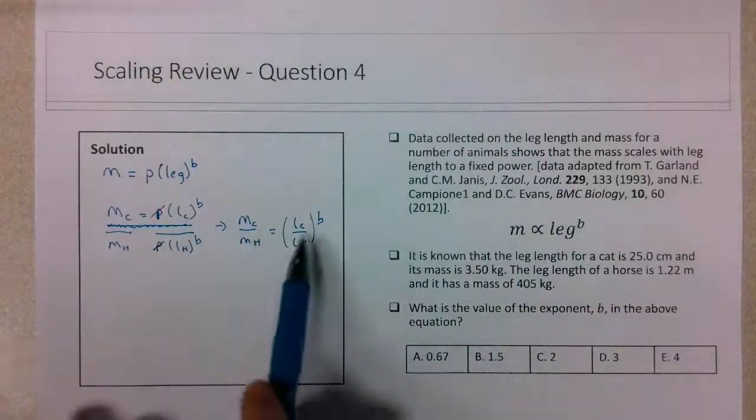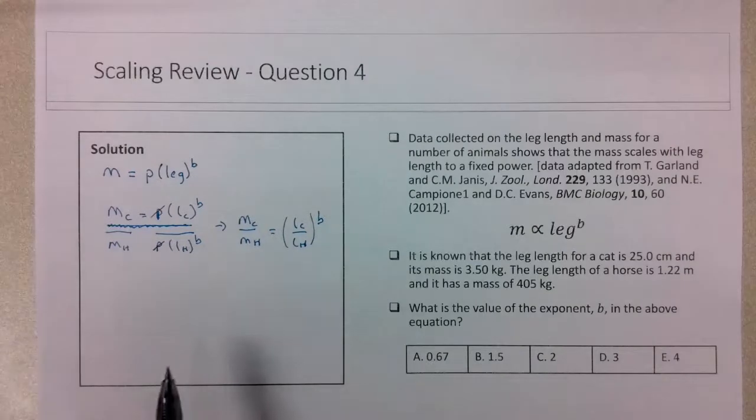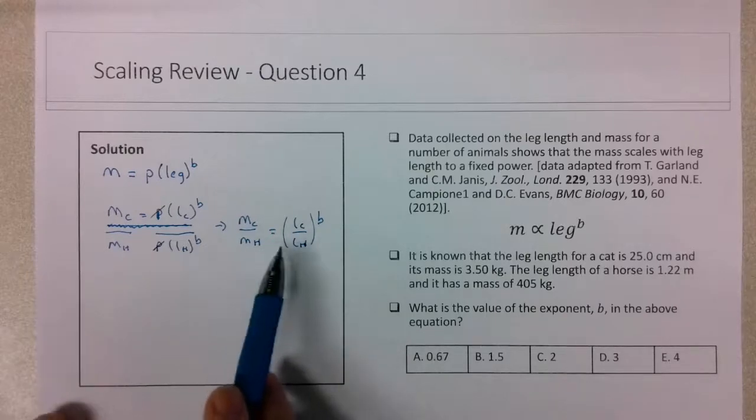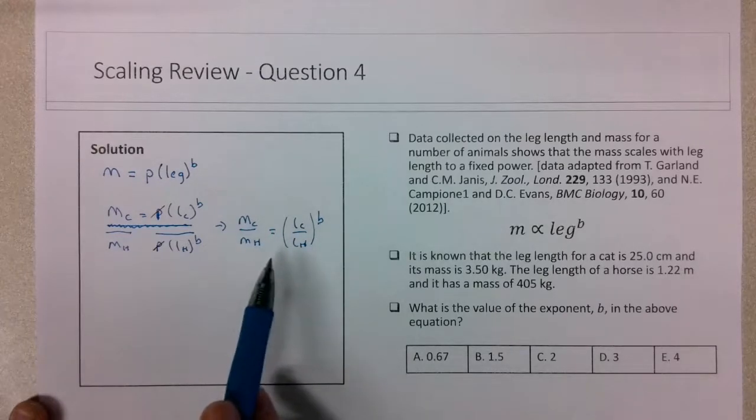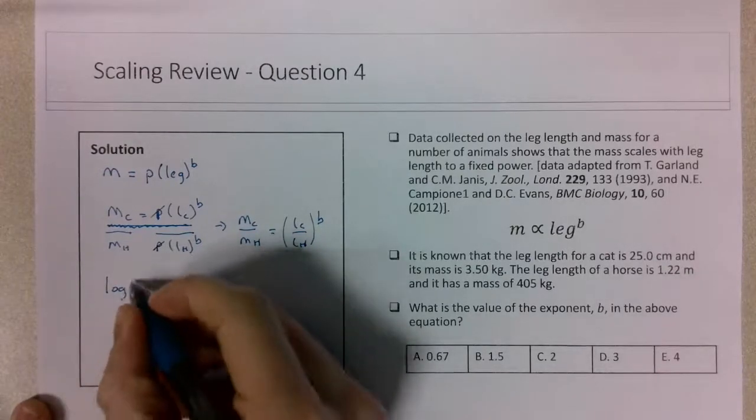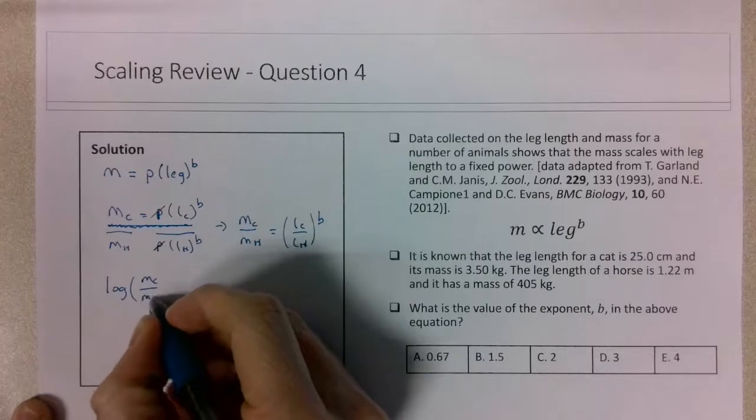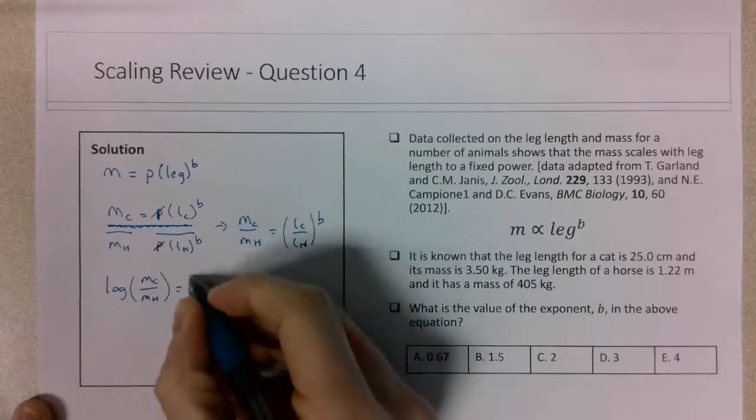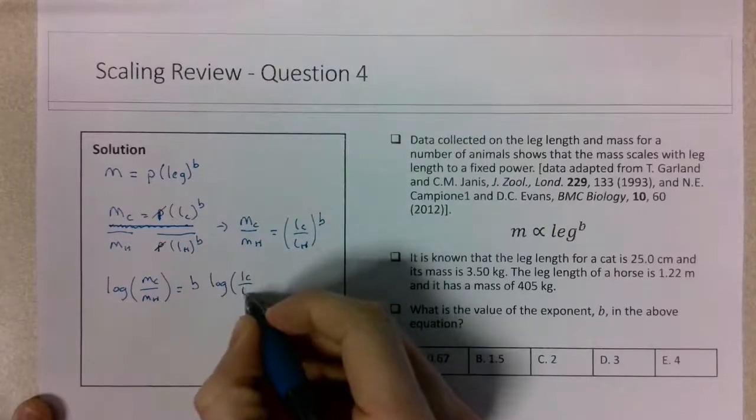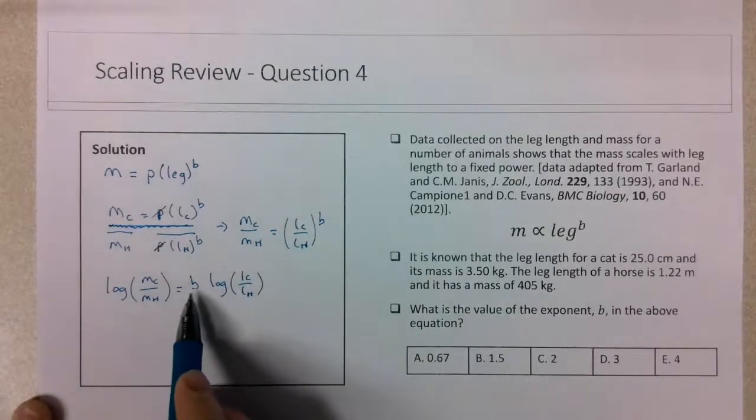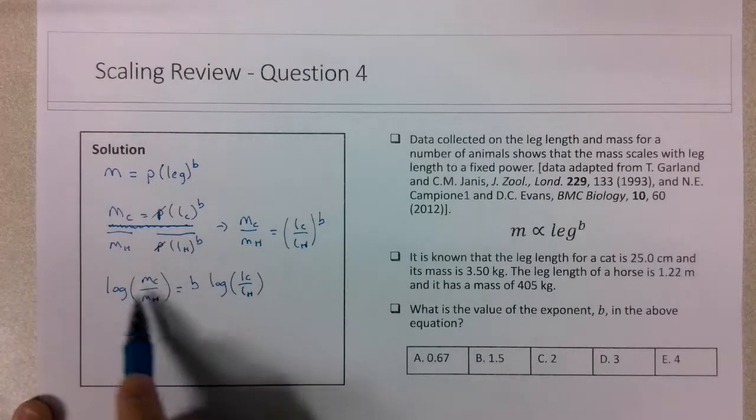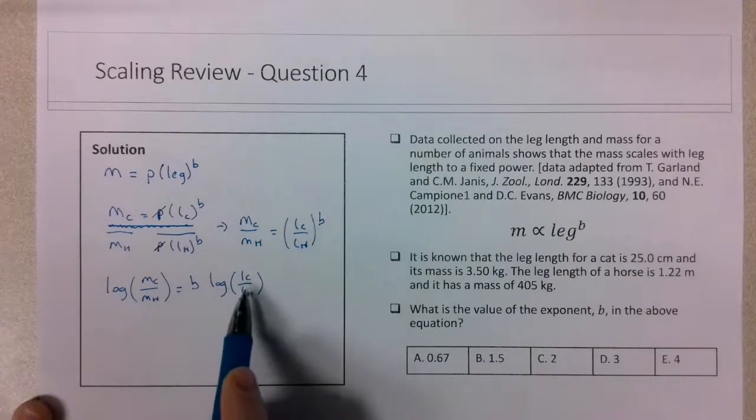The only unknown in this expression is the exponent, which is what we're trying to find. To get the exponent as the subject, I'll take the log of both sides. The log of mc over mh equals b times the log of lc over lh. So b equals the log of mc over mh divided by the log of lc over lh.